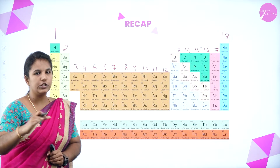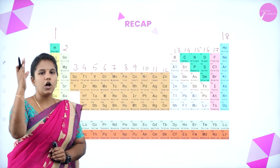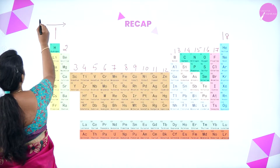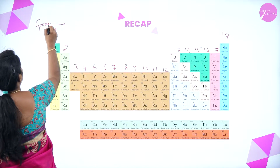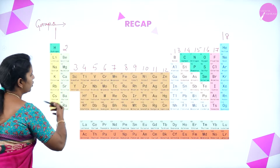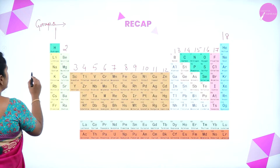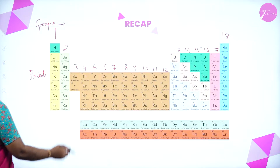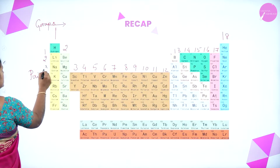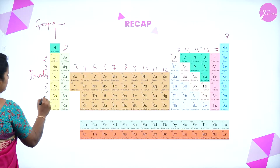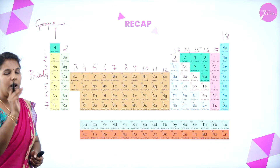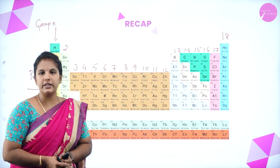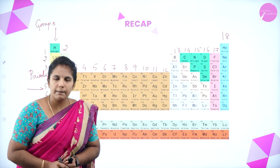The horizontal rows are called periods and the vertical columns are known as groups. There are 18 groups and 7 periods in the periodic table.